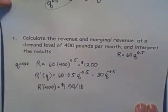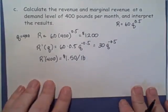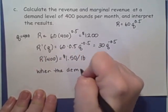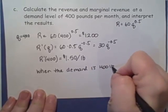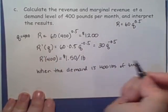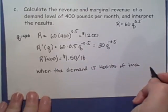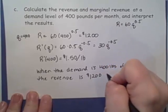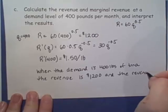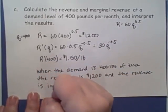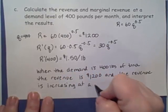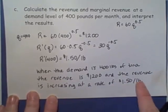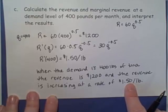Okay, so before we actually move on from this, let's make sure we can write a sentence that kind of interprets all that information. So let's start out with, when the demand is 400 pounds of tuna, the revenue is $1,200, and the revenue is increasing at a rate of $1.50 per pound. So if they sell another pound of tuna, we're going to expect that the revenue is going to go up by $1.50.